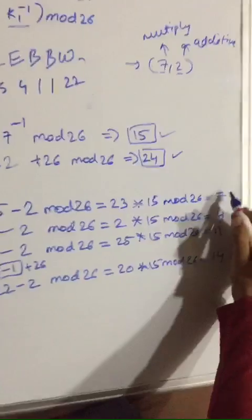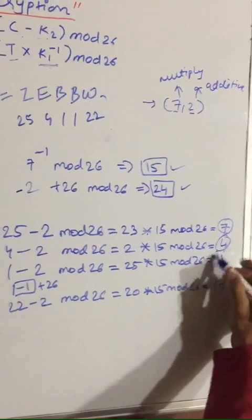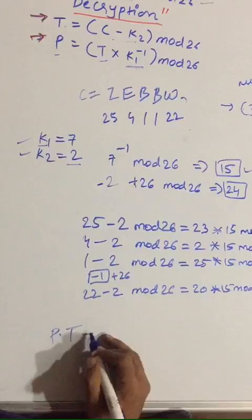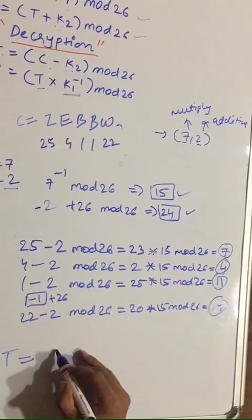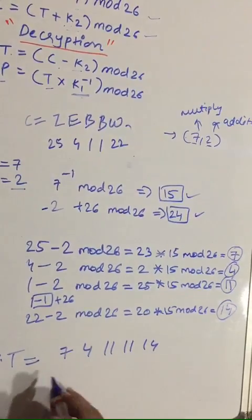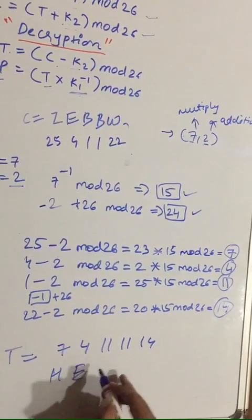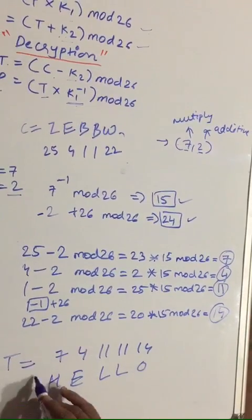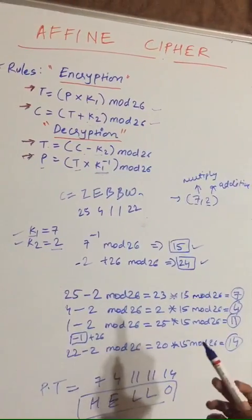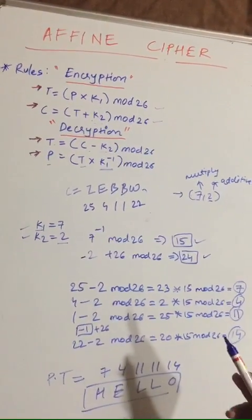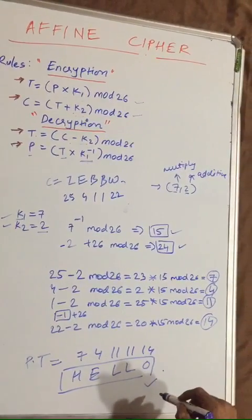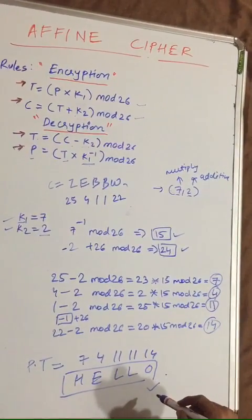Now we have found all the terms. As you can see, this will be the value of plain text. Your plain text will be 7, 4, 11, 11, and 14, which is HELLO again. This was affine cipher encryption and decryption. You have generated the plain text value. Thank you.